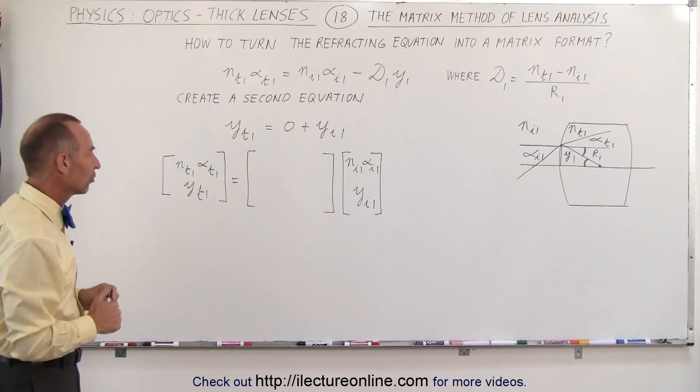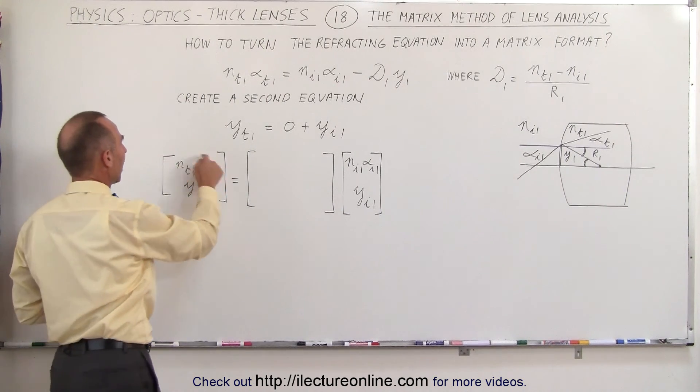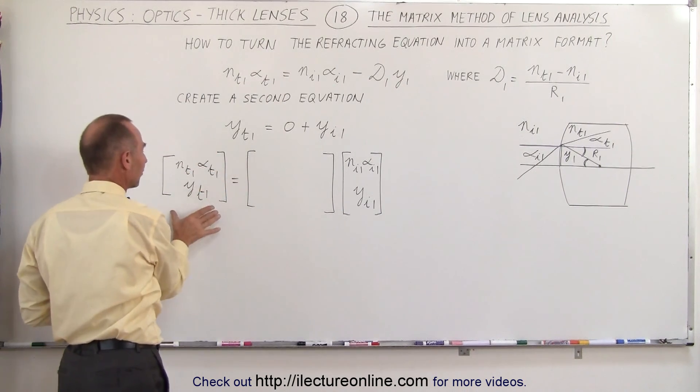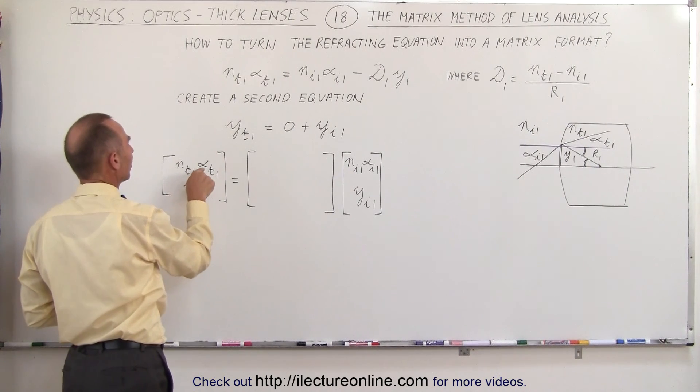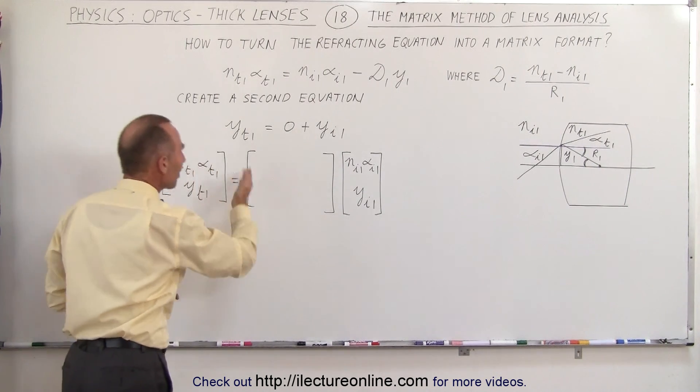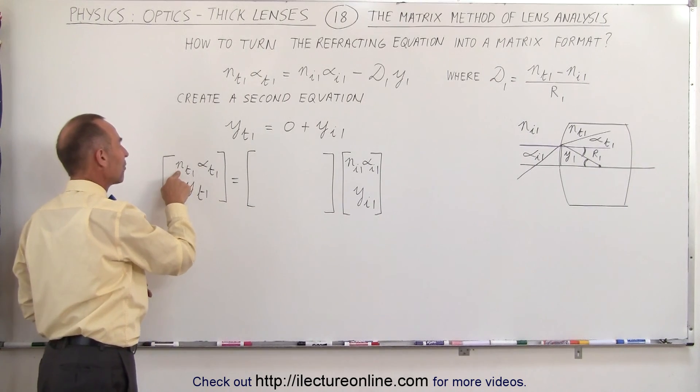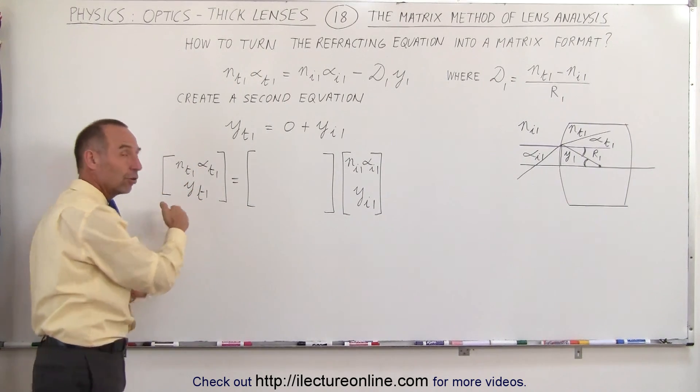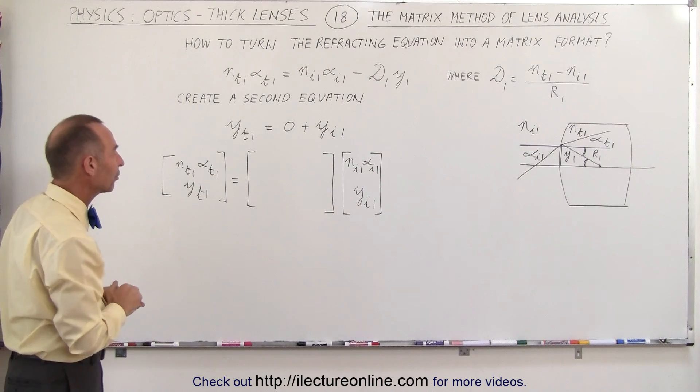Now notice here on the 1 by 2 matrix in the front here we have the information about the ray on the transmitted side of the boundary, the index of refraction and the angle and the height just past the boundary.